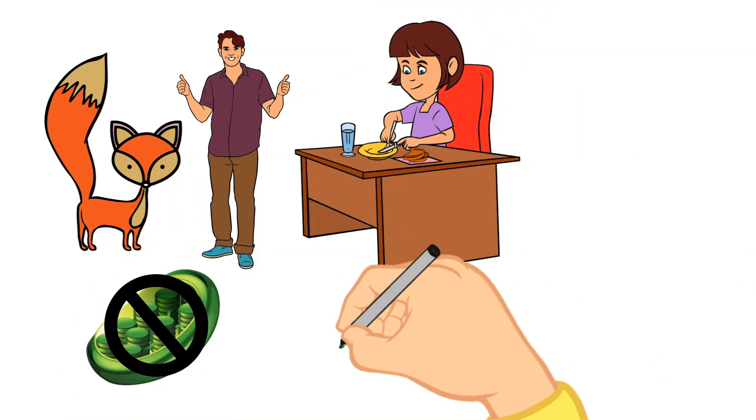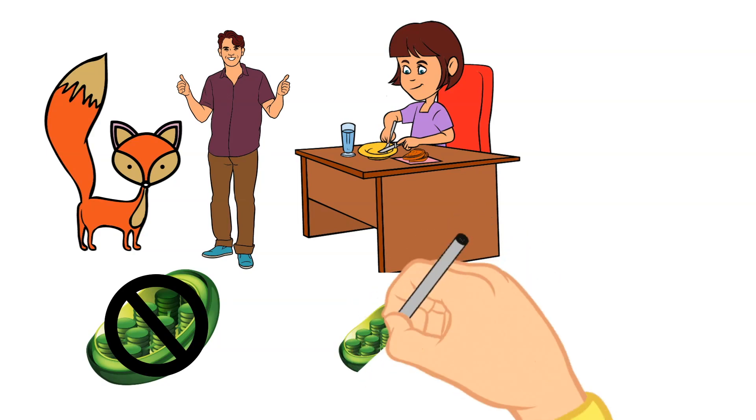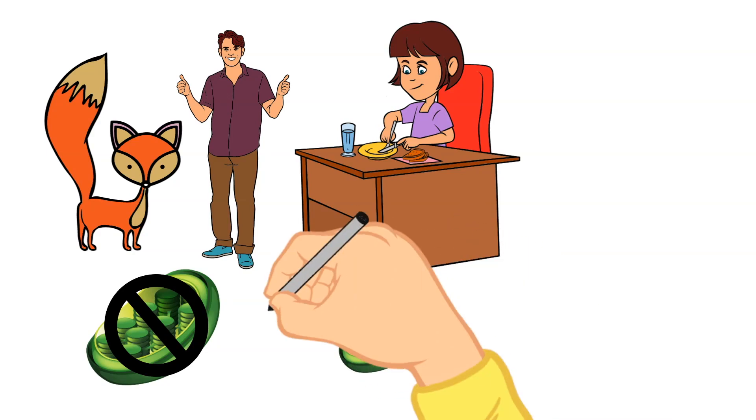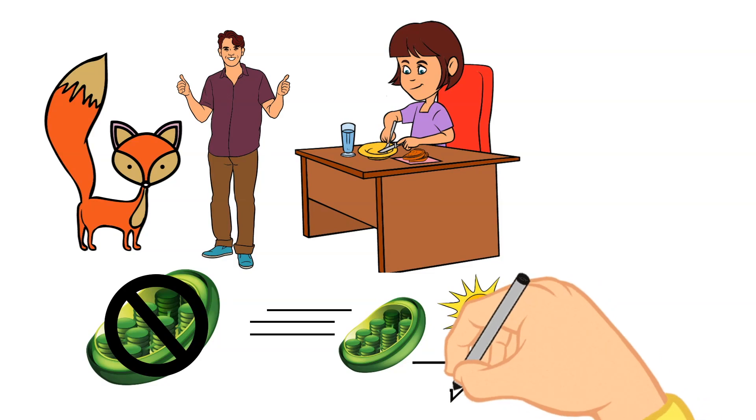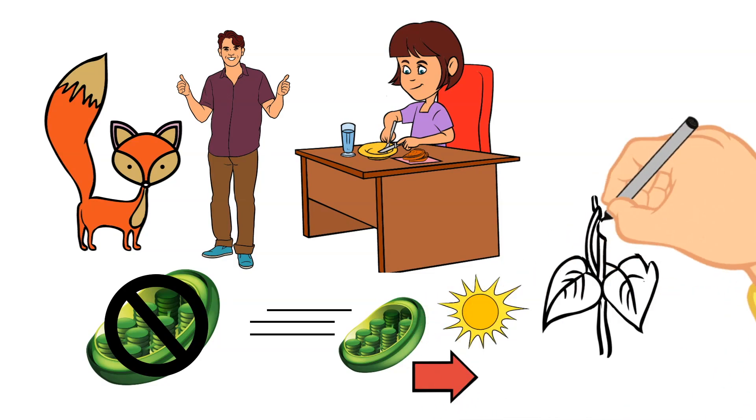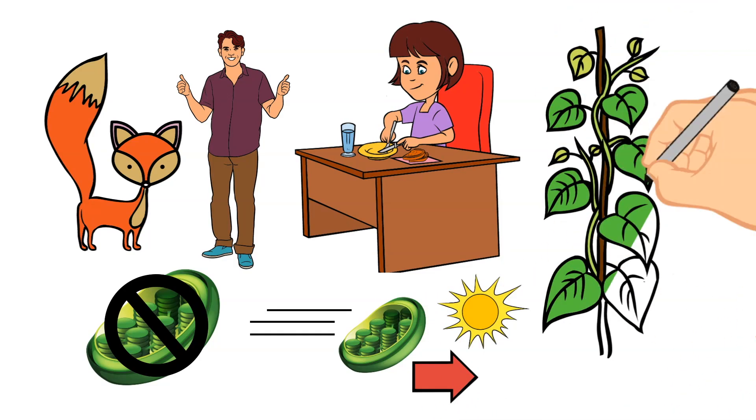An interesting fact about chloroplasts is they will even move around in the cell to put themselves in the best position where they can absorb the most sunlight. There are about 500,000 chloroplasts in a single square millimeter of a leaf.